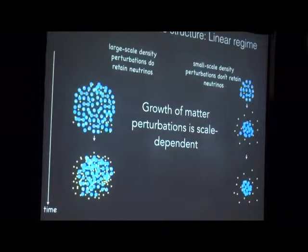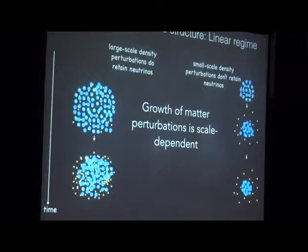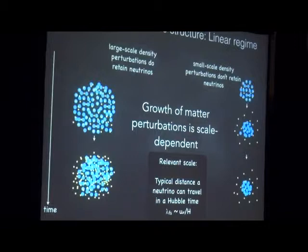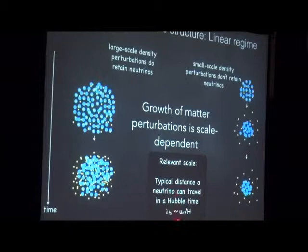On the other hand, if I'm looking at a very large-scale density perturbation — large compared to the typical distance neutrinos travel in a Hubble time — the different behavior between cold dark matter and neutrinos is not apparent, and that large-scale perturbation holds onto its neutrino component. So the linear gravitational evolution of density perturbations depends on scale: faster growth on very large scales where neutrinos and cold dark matter grow together, and slower growth on smaller scales where neutrinos contribute to expansion but not gravitational collapse.